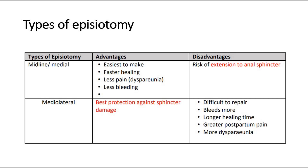The reason why the midline incision has a higher risk of extension to the anal sphincter is because it cuts through the aponeurosis of the muscles, so there is a higher risk of extension into the rectum. The healing time for an episiotomy incision is around 4 to 6 weeks on average, depending on the size of the incision and the type of suture material used.